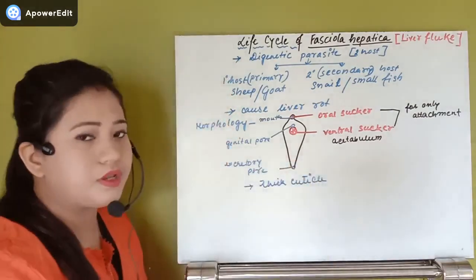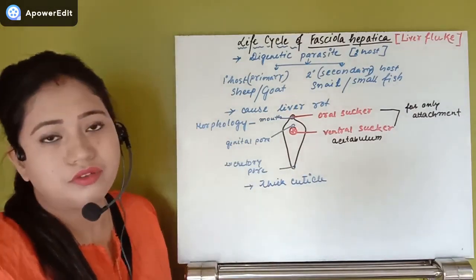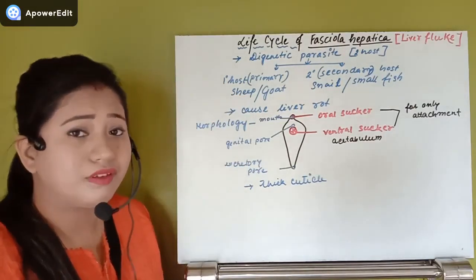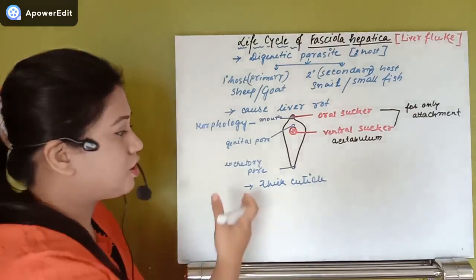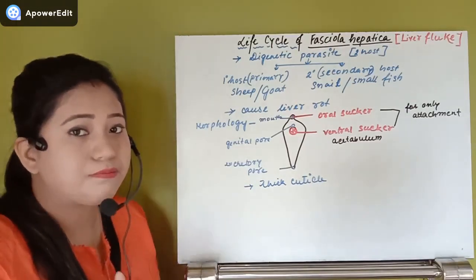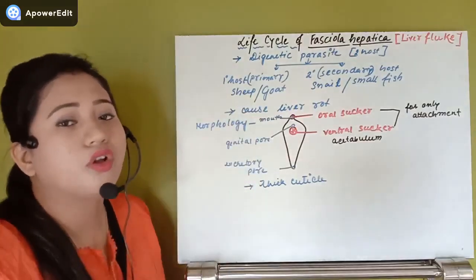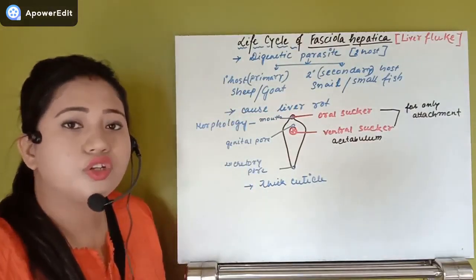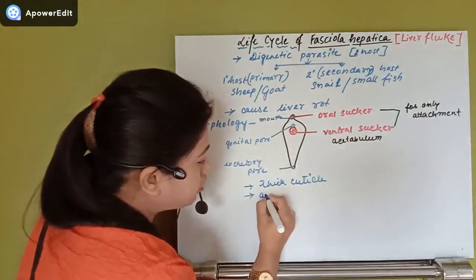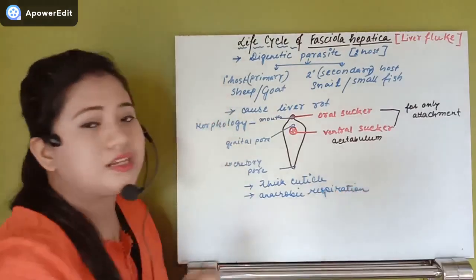This organism has a very thick cuticle. Since it lives inside the host body, it must be protected from the host's enzymatic activities — such as hydrochloric acid and bile in the sheep or goat — which could digest the parasite. The thick cuticle protects Fasciola hepatica from being digested by the host's enzymes.